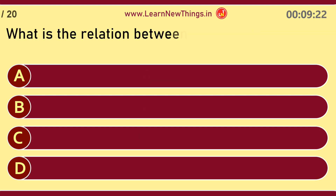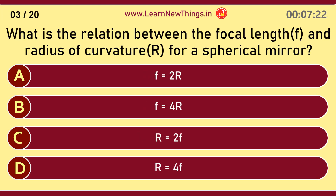What is the relation between the focal length and radius of curvature for a spherical mirror? R equals 2F.